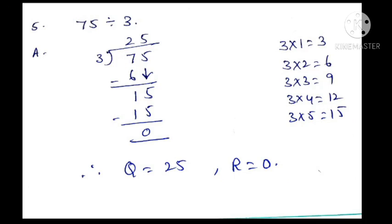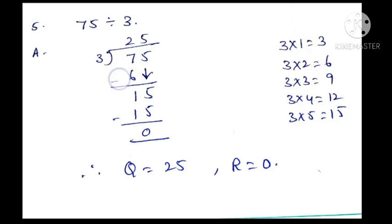Fifth question: 75 divided by 3. Here 3 is the divisor. We recall the table of 3. Here what is the first digit? 7. See the table: 3 ones are 3, 3 twos are 6, 3 threes are 9. Compared to 7, 9 is bigger. So we take 3 twos are 6. This 2 we write above the line, and this 6 we write below the 7. Subtract: 7 minus 6 is 1. Then drop the digit 5 down — it becomes 15.